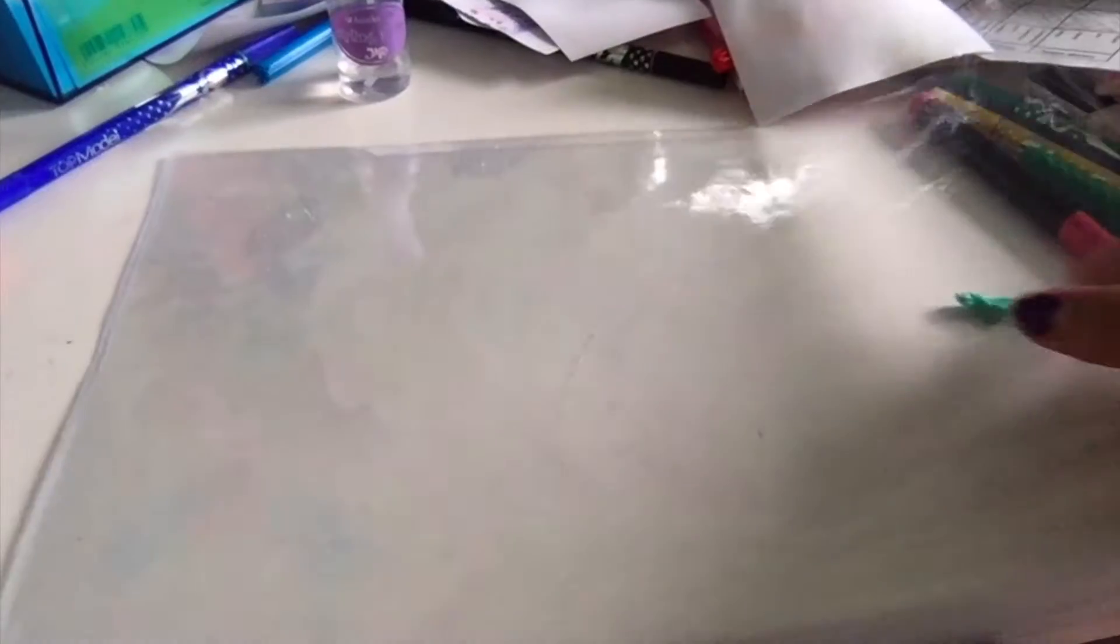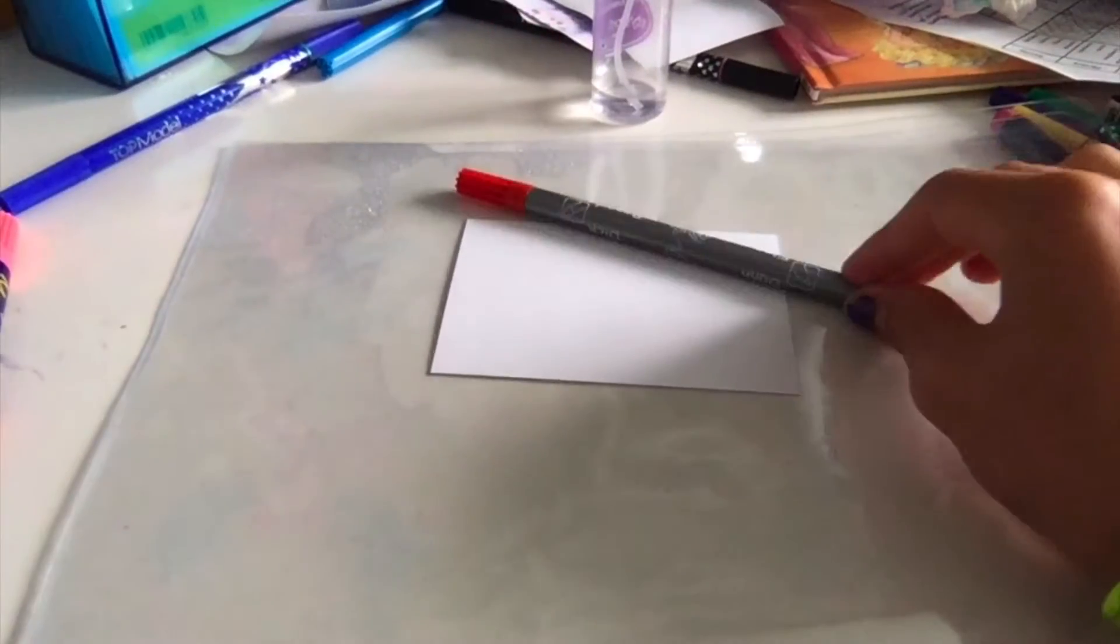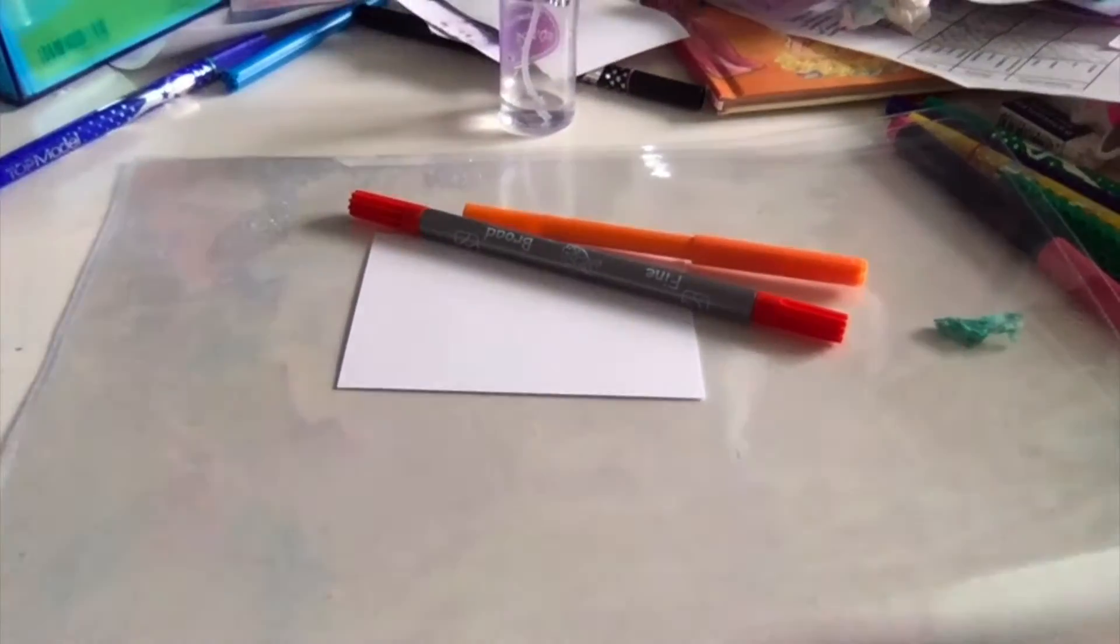What you need to make this is a plastic sheet or folder, a spray bottle filled with water, a flashcard preferably thick, and the pens which you're going to use to make it. I'm making a rainbow, so I'm